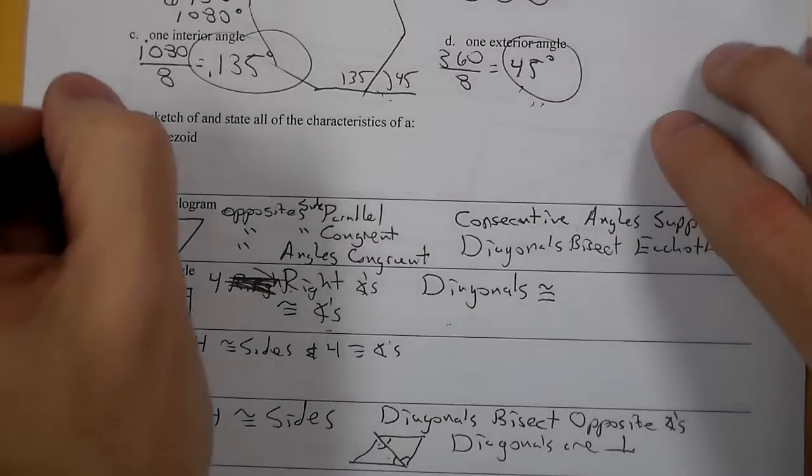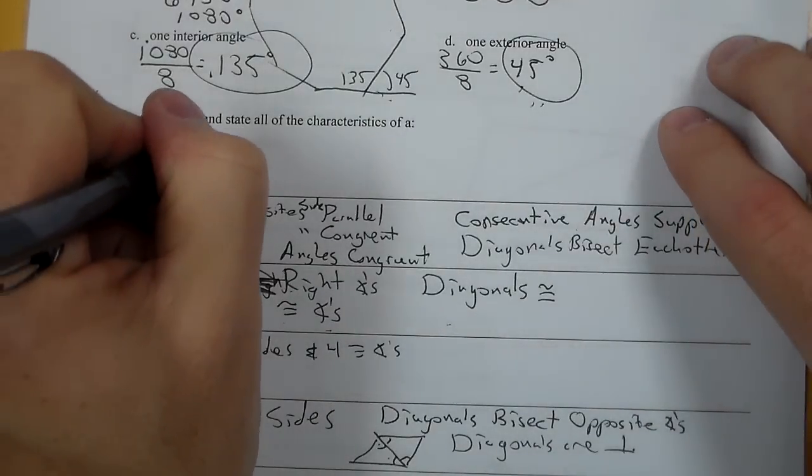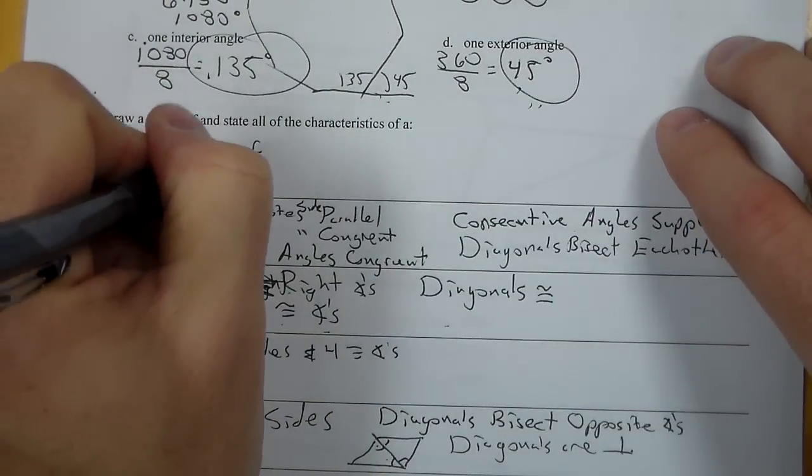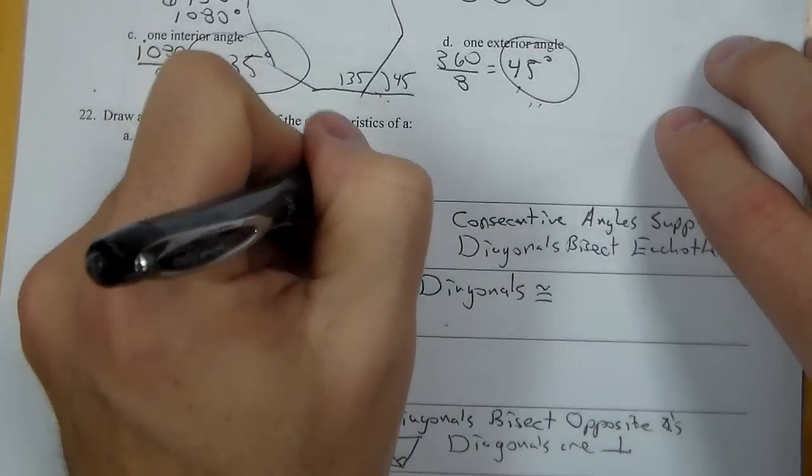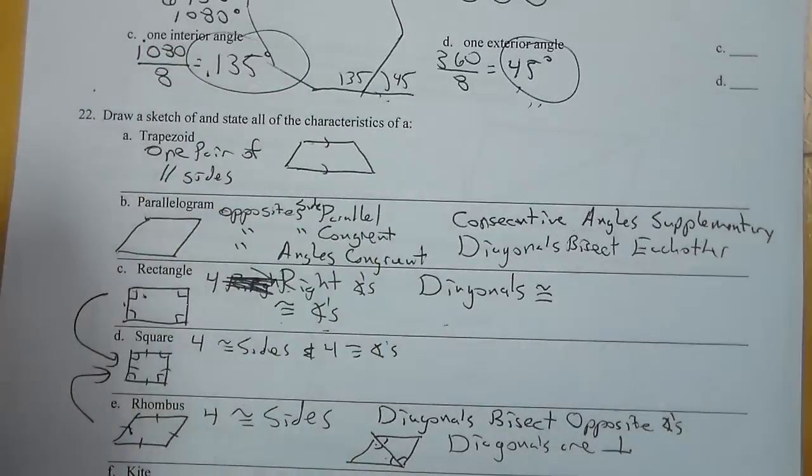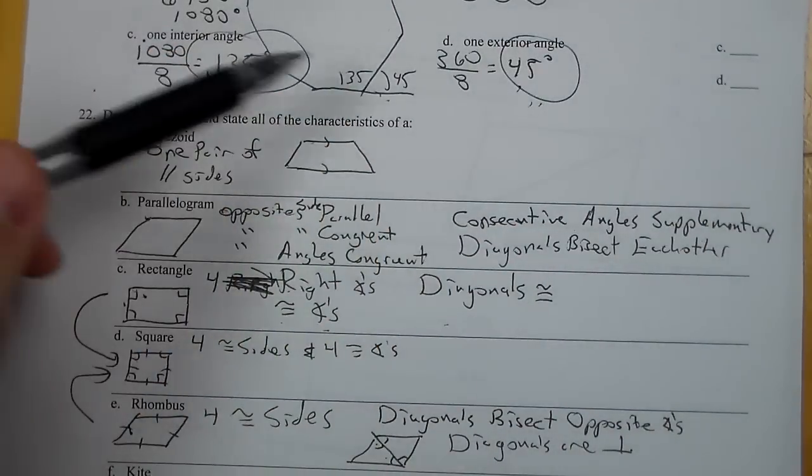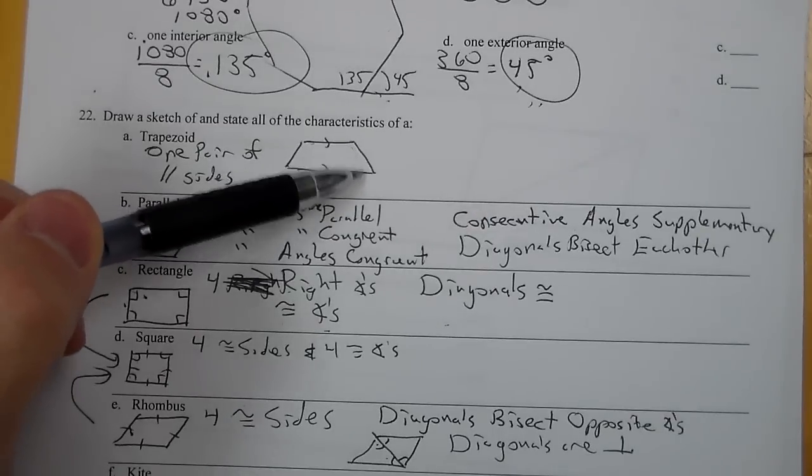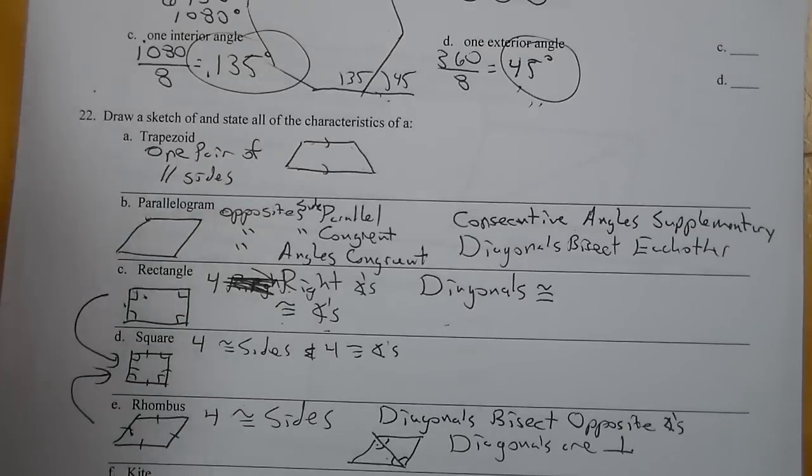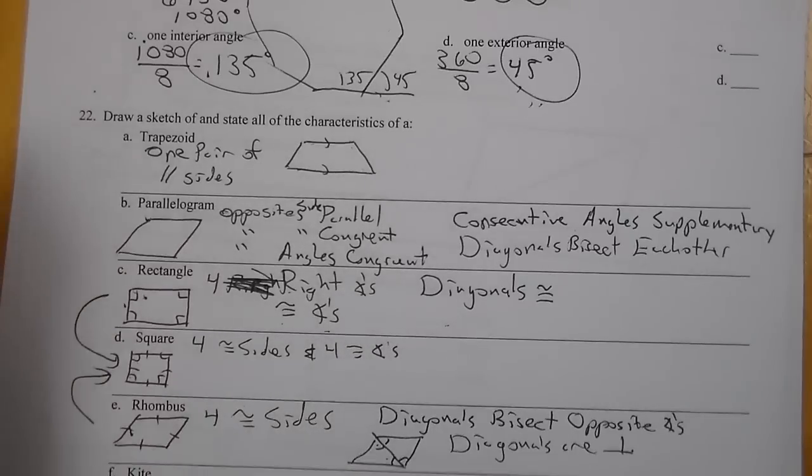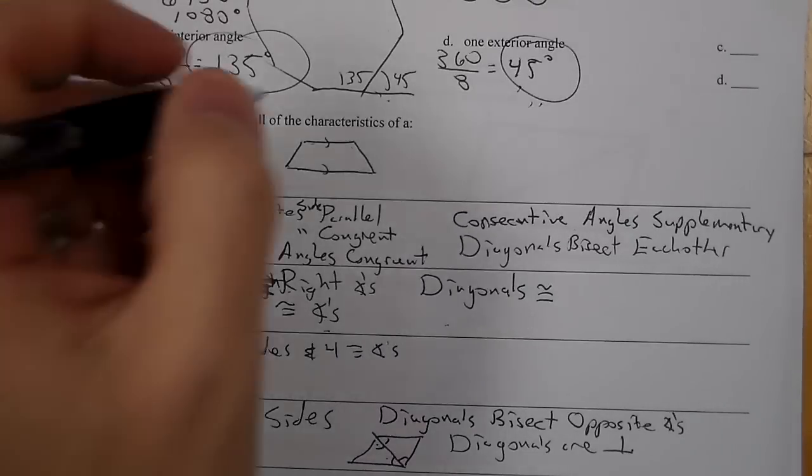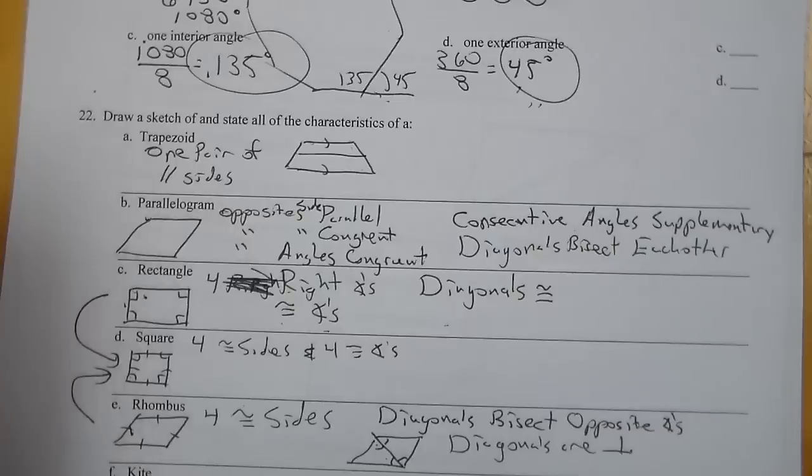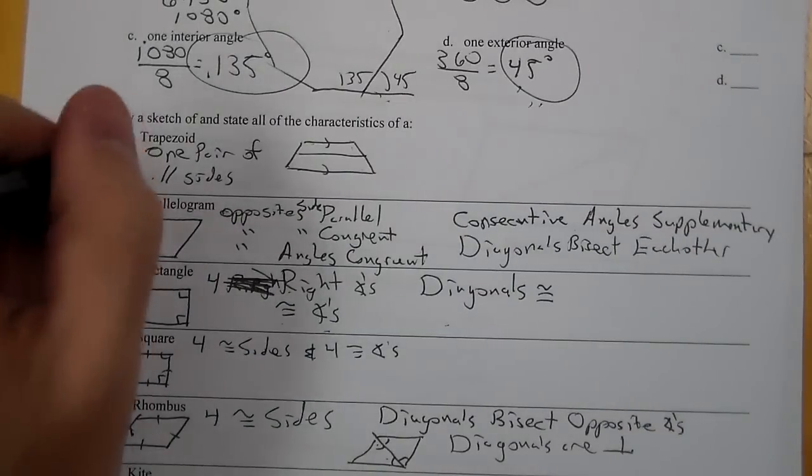A trapezoid has one pair of parallel sides, and those are opposite sides, obviously. We do have consecutive angles supplementary, but it's these two and these two, it's not a cross. If it was an isosceles trapezoid, we would then have properties about diagonals being congruent, but that doesn't apply here. So one pair of parallel sides is a trapezoid. Maybe go mid-segment. There's a mid-segment formula where it's the average of the bases, but I'd stick with that property.